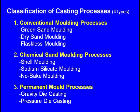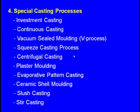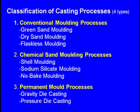Let us quickly look at the different casting processes. We have broadly four types: one is the conventional molding process, second is the chemical sand molding process, third is the permanent molding process, and fourth is the special casting process. In the conventional molding process we have green sand molding, dry sand molding, and flaskless molding. In the chemical sand category we have shell molding, sodium silicate molding, and no bake molding. In the permanent molding process we have gravity die casting and pressure die casting.